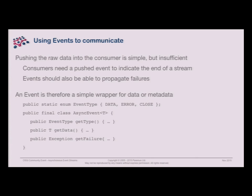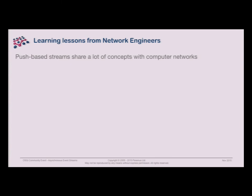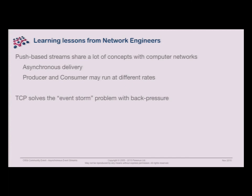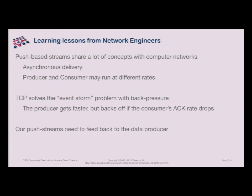We should learn lessons from network engineers, because a push-based stream is a lot like a network — asynchronous delivery, producers and consumers potentially running at different speeds. TCP has already solved the event storm problem with back pressure: the producer keeps getting faster until it stops receiving ACKs at the same rate, at which point it backs off. That's how you reach the right line speed without overwhelming the other side. Our push streams need a similar feedback mechanism so we can tell the data producer: 'I'm fine at this speed' or 'slow down please.' The simplest way is to say: 'I've received that — don't call me again for a while.'